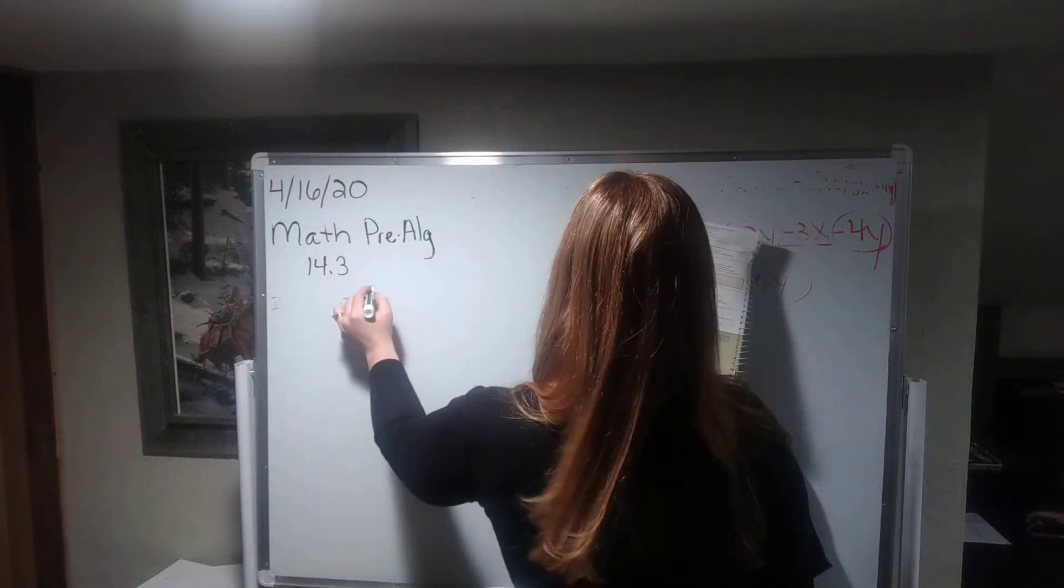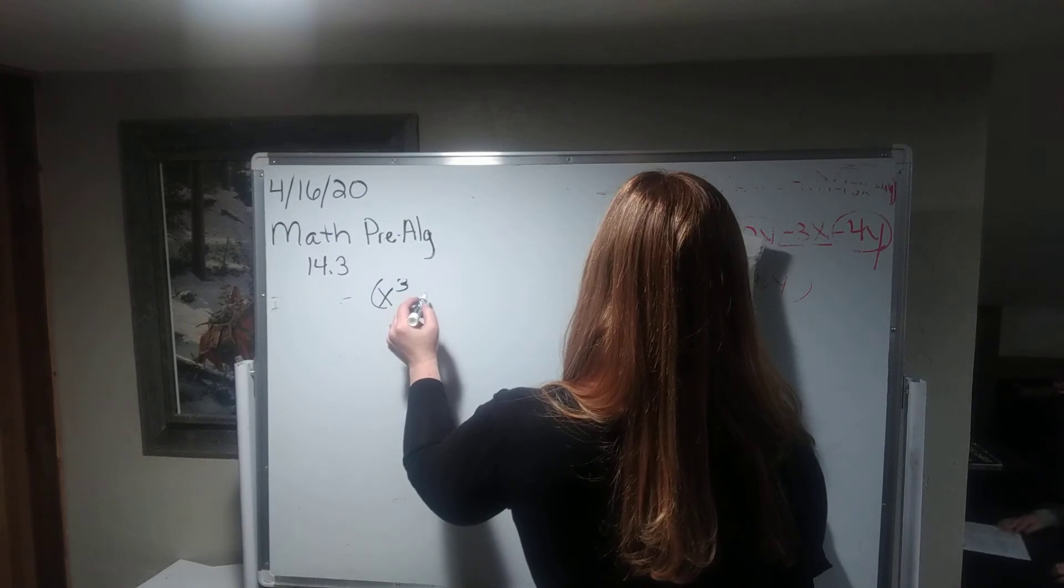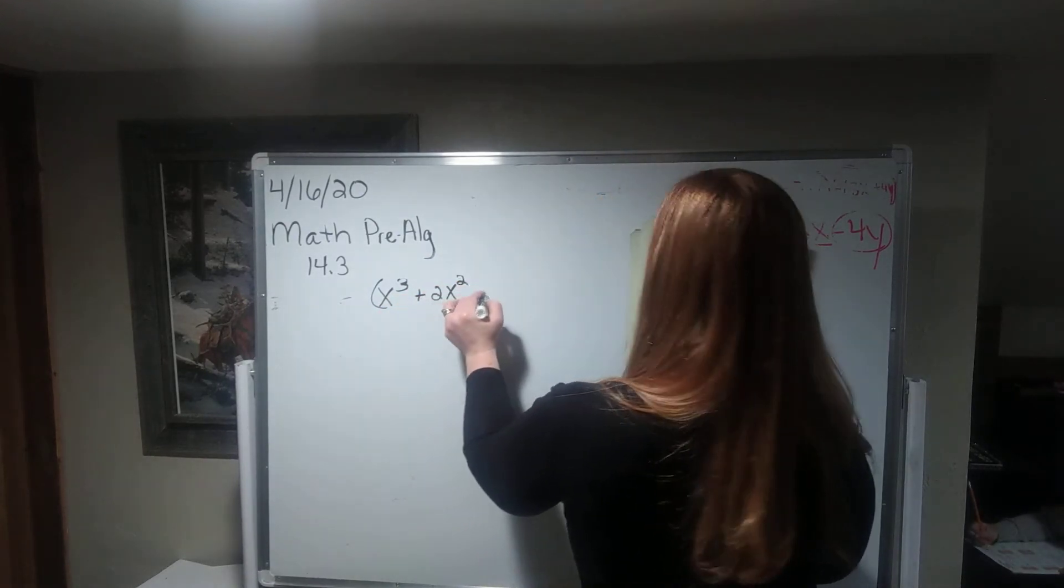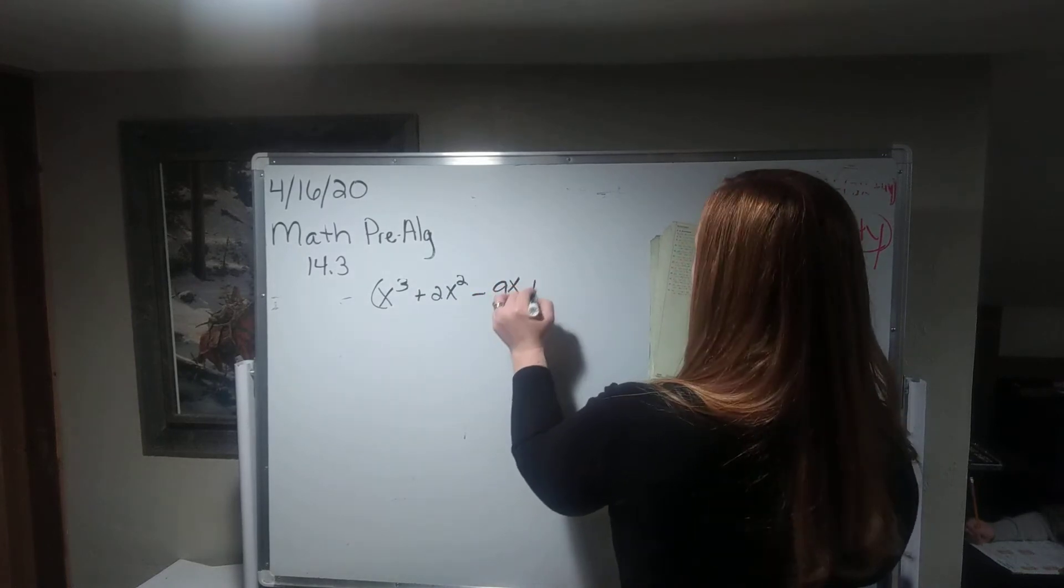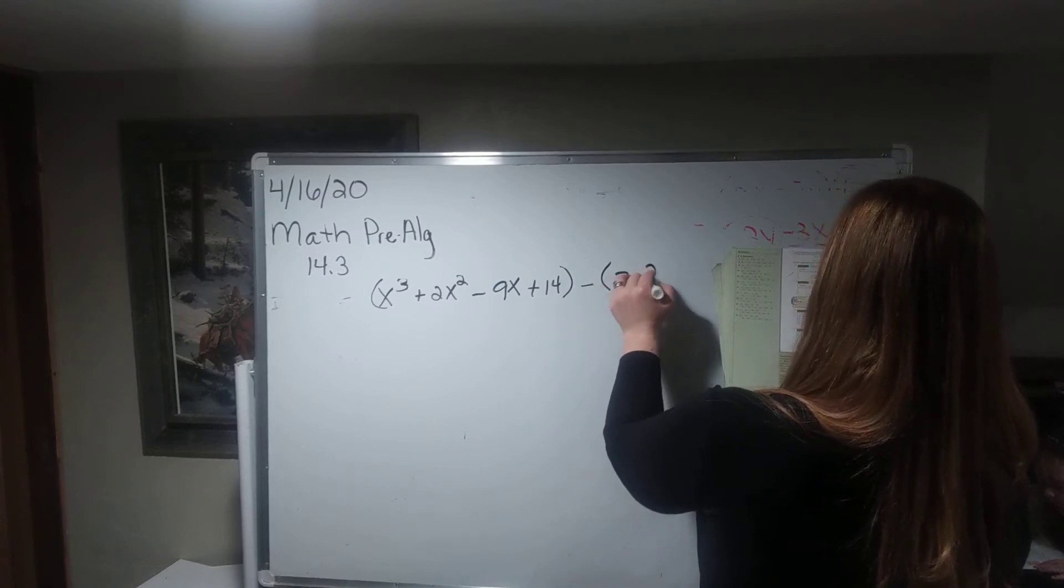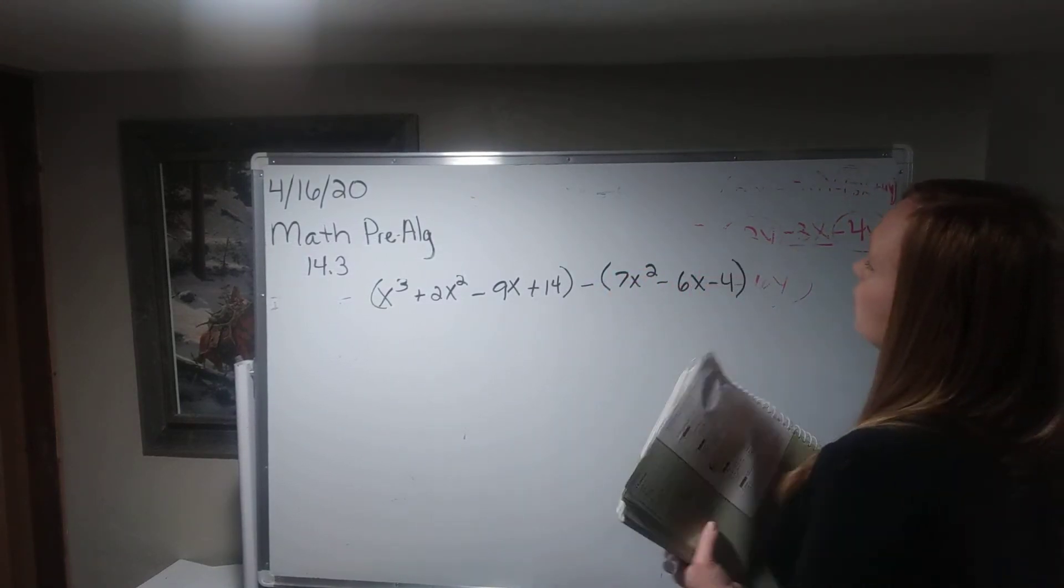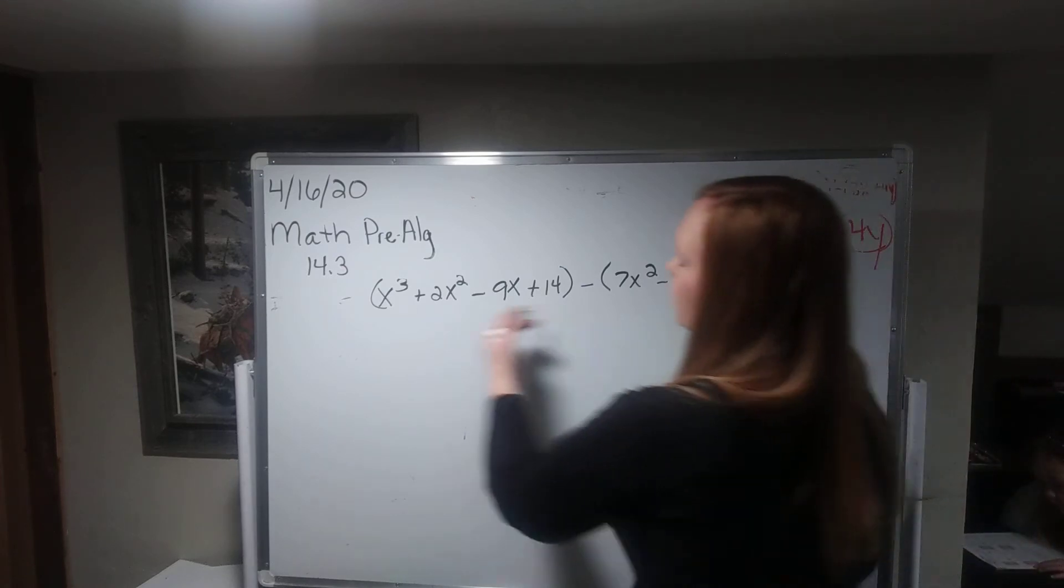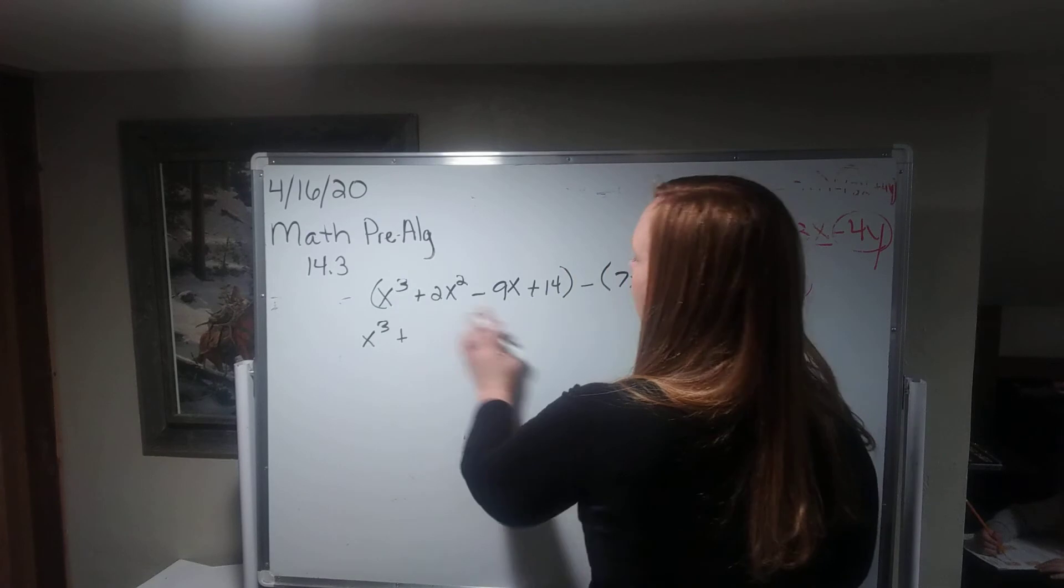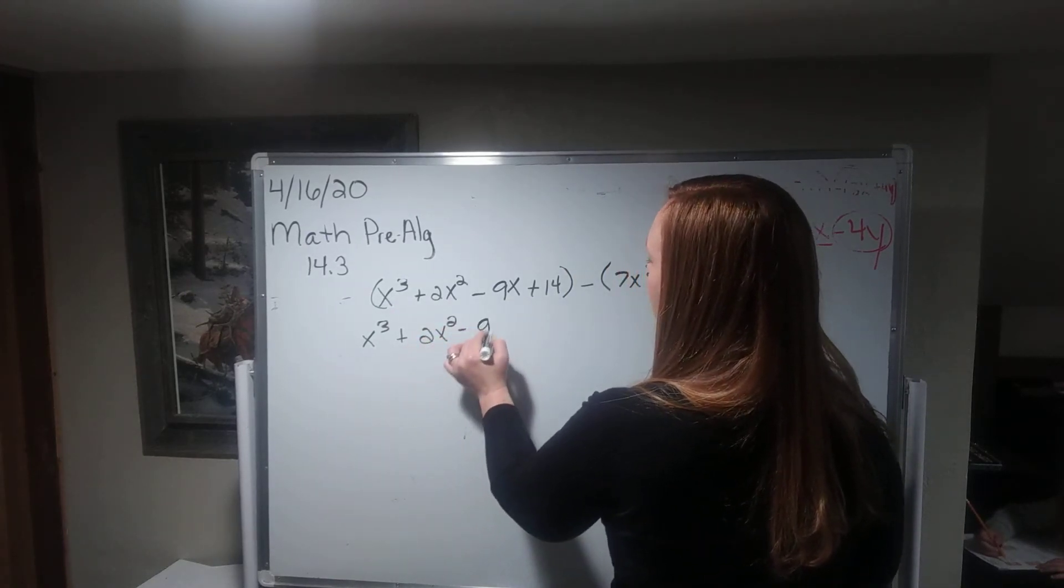Okay, so example 5 is x cubed plus 2x squared minus 9x plus 14 minus 7x squared minus 6x minus 4. Okay, so again, positive so I can take this outside of the parentheses because there's nothing I can combine inside. I would want to do that first if I could.